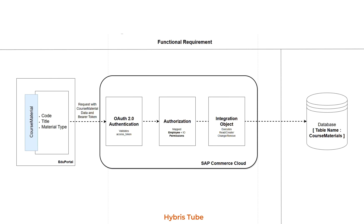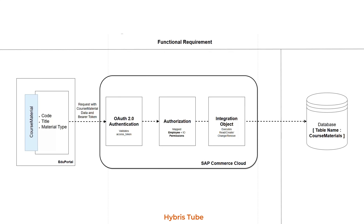We want this communication using OAuth2 authentication via inbound channel configuration, and we also want to authorize this request. For that, we will have an employee with some integration groups, and we will give the right permissions to this employee so that the client ID and client secret mapped with this employee has the right permissions to create, update, or delete data in the course materials database table.